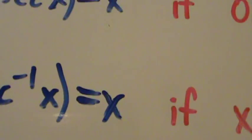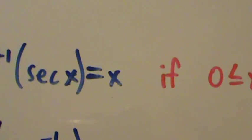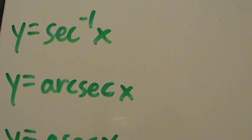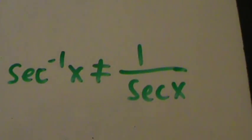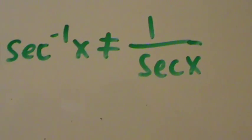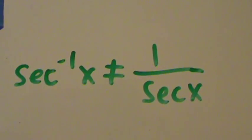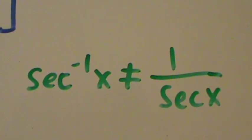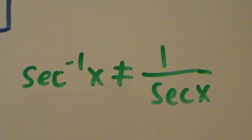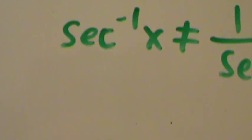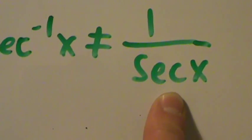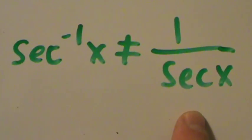That's pretty much it for the inverse secant function, but a quick note about notation. We want to be very careful: that negative one in the exponent does not mean the same thing it normally means for algebraic expressions. The inverse secant of x is not the same thing as one over the secant of x. For algebraic expressions, a negative one exponent means a reciprocal, but for trig functions it means the inverse function — coming from the notation where the inverse of f is written as f⁻¹. One over secant of x is actually the cosine of x, and cosine of x is not the same thing as the inverse secant of x.